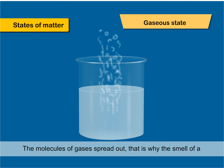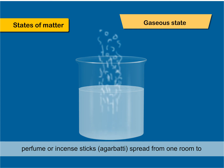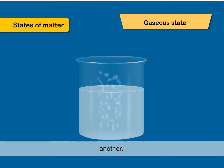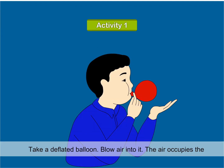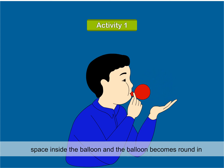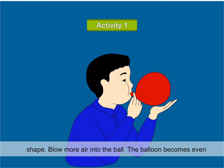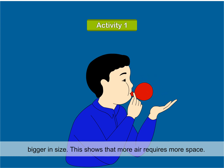The molecules of gases spread out. That is why the smell of a perfume or incense sticks (agarbatti) spreads from one room to another. Activity: Take a deflated balloon and blow air into it. The air occupies the space inside the balloon and the balloon becomes round in shape. Blow more air into it and the balloon becomes even bigger in size. This shows that more air requires more space.